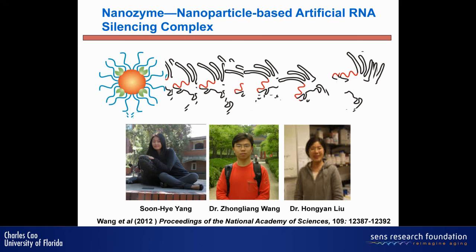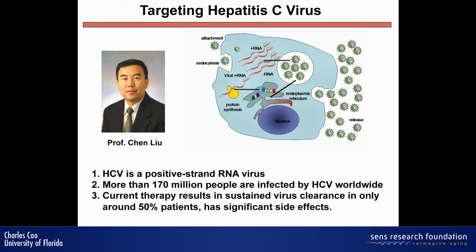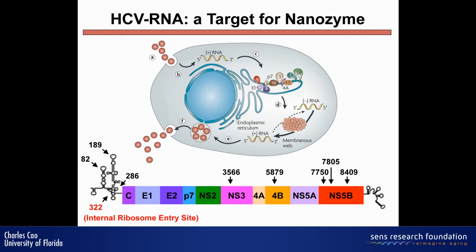We chose HCV — hepatitis C virus — as a target, which is really important because a lot of people are affected. This is an RNA virus, and we target the conserved part of it. Here is our design: we use DNA with a nanozyme — this covers two parts. The nanozyme structure is very close to RISC: RNase H covers two parts of the RNA, this is the nanozyme. There are steric effects and high density that block non-specific binding.